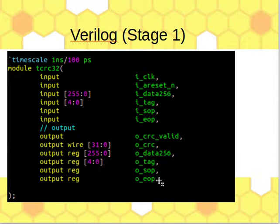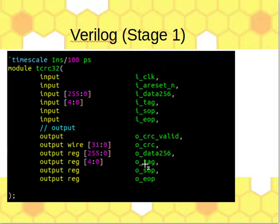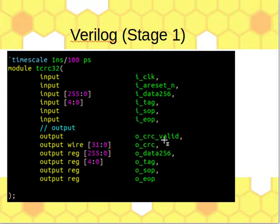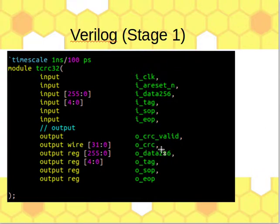Alongside the CRC output, the module also outputs the 256-bit data, the 5-bit tag, and SOP/EOP. Normally these should be aligned so that when the data is output the CRC is valid with the EOP, but it depends on how you want to use the CRC — it's left to the user to process as needed.